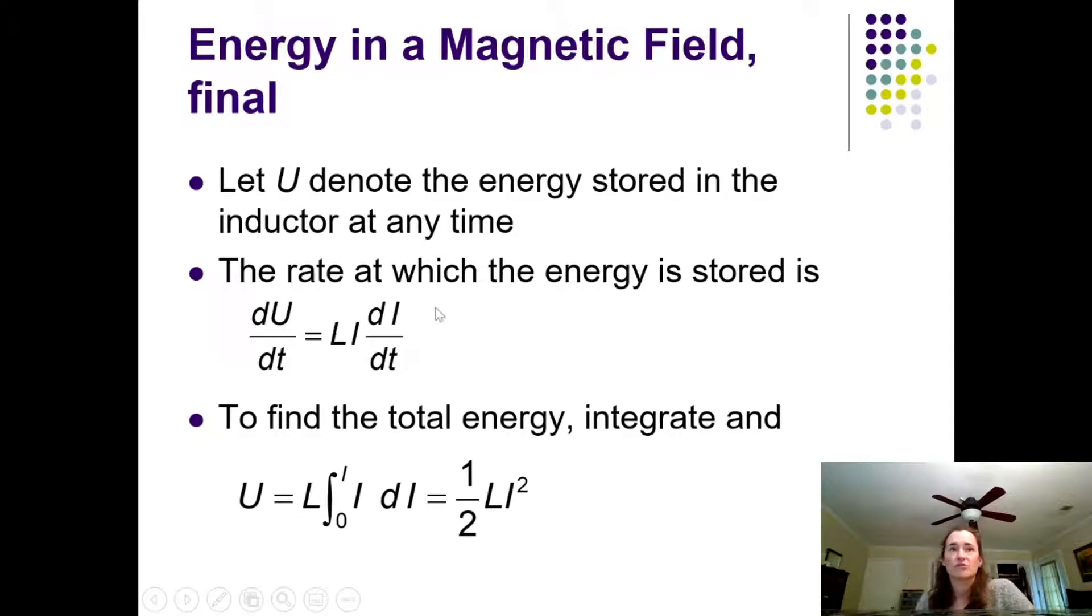And then when you integrate the right-hand side, L is the constant, depending on the geometry of whatever kind of inductor you've got, so you can pull that out. It's not dependent on the current. You would have L times the integral of I dI. If you're starting out at time T equals zero with no energy stored in the inductor, then you would be integrating that from zero to I. When you integrate I dI from zero to I, you get one-half L I squared. So the total energy stored in an inductor with the current I running through it would be one-half L I squared.